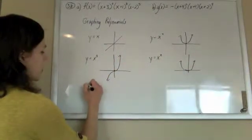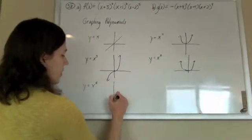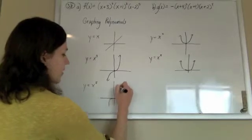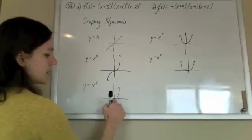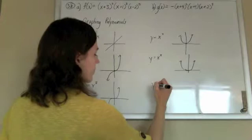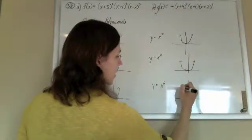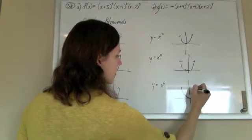Same idea with y equals x to the fifth. If you were to graph that, it basically looks like an x cubed, just a little flatter there. This is a little exaggerated, but a little flatter there. And y equals x to the sixth. Same idea, just slightly flatter.